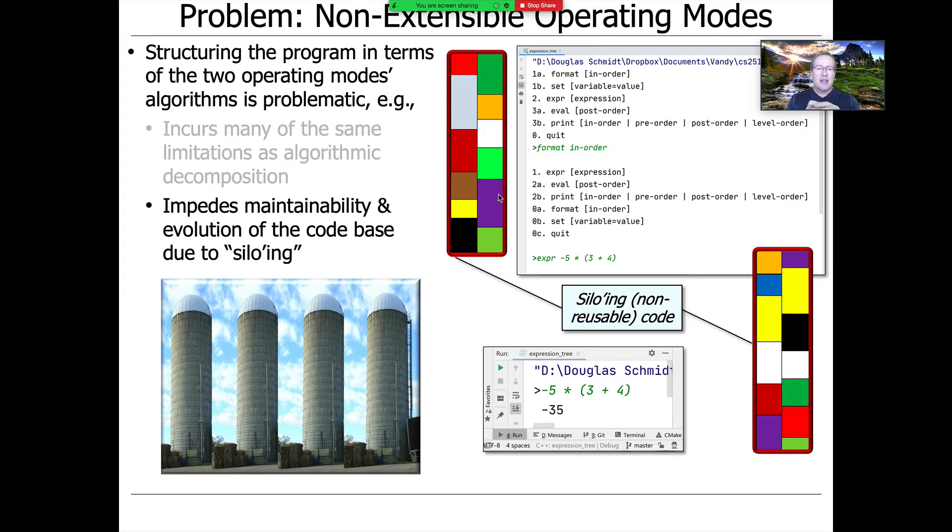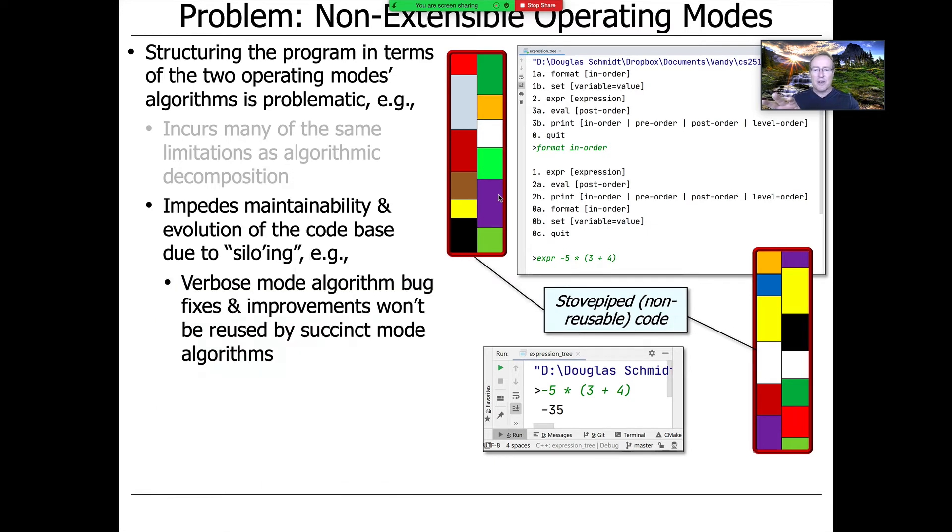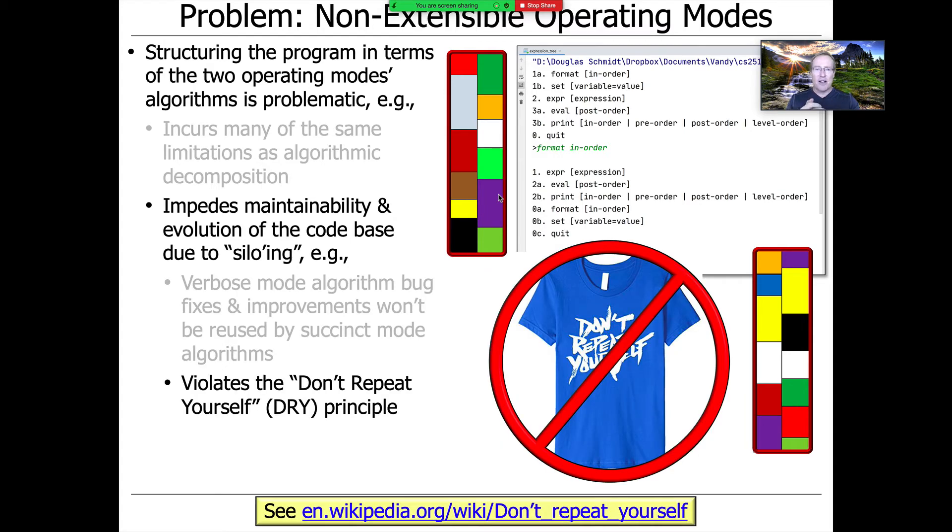Whenever you try to do things where you've got multiple versions that are more or less the same, you can end up with something called siloing. If you're not careful, you'll have one baseline of code that handles verbose mode, another that handles succinct mode, and never the twain shall meet. You're going to end up repeating yourself. So if there's bug fixes or improvements, optimizations you want to add, you're going to have to do this in multiple places, which becomes very tedious and error prone.